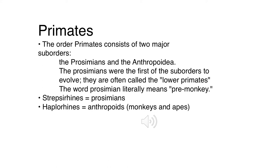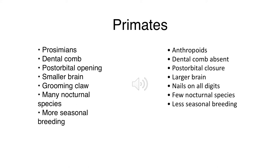The primate order consists of two major suborders. Prosimians are the exact same as Strepsirrhini - those terms are interchangeable. Anthropoidea and Haplorhini are also interchangeable. The prosimians were the first suborder to evolve; they are often called lower primates, and the word prosimian literally means pre-monkey, making them a first step toward becoming primates.